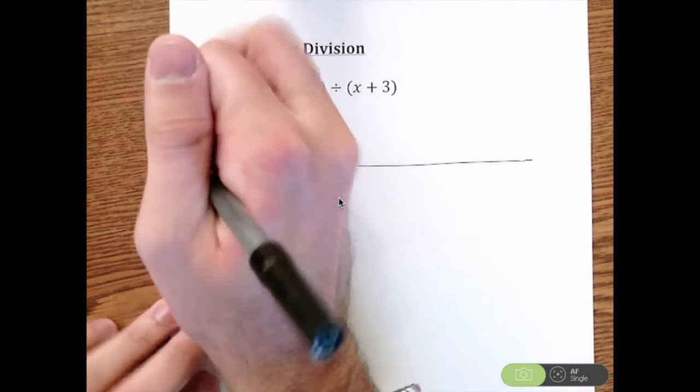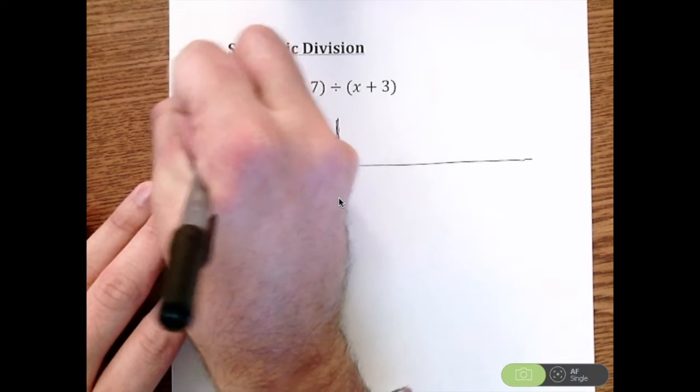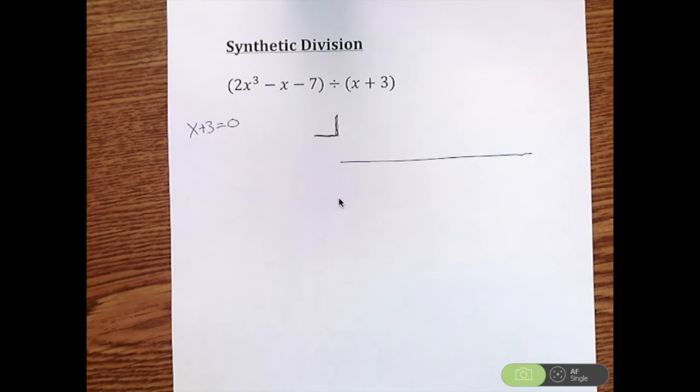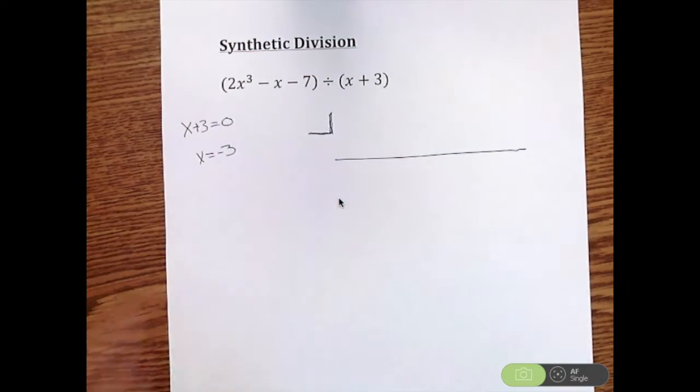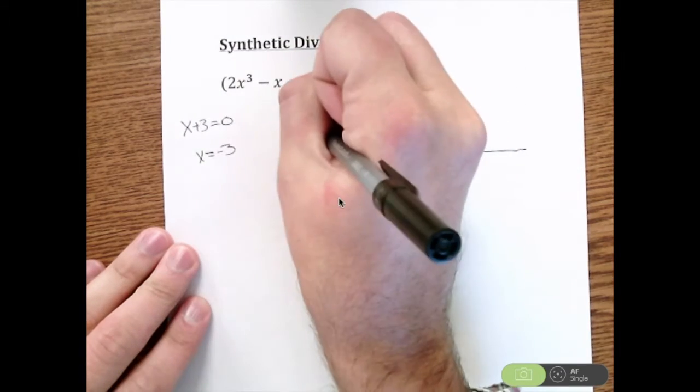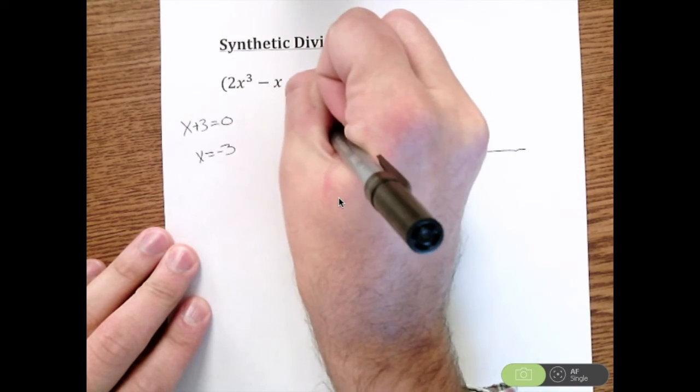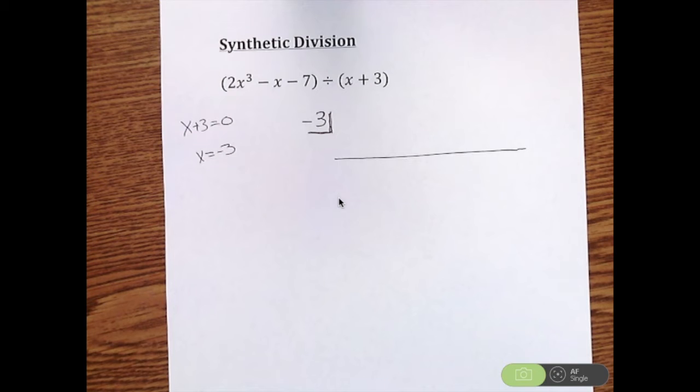So figure out what goes in the box - actually what you're dividing by. We're dividing by x plus 3, but to figure out what goes in the box we're going to take x plus 3, set it equal to 0, and solve that. So if you have x plus 3 equals 0, you solve and get x is negative 3. So that number is what we're going to start with in the box.